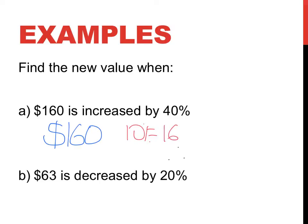my three little dots, 40% is going to be equal to 16 times 4, which is going to be 4 times 10 is 40, 6 times 4 is 24, 40 plus 24 is $64. So $160 is increased by 40%. My answer isn't $64, I'm hoping you see.